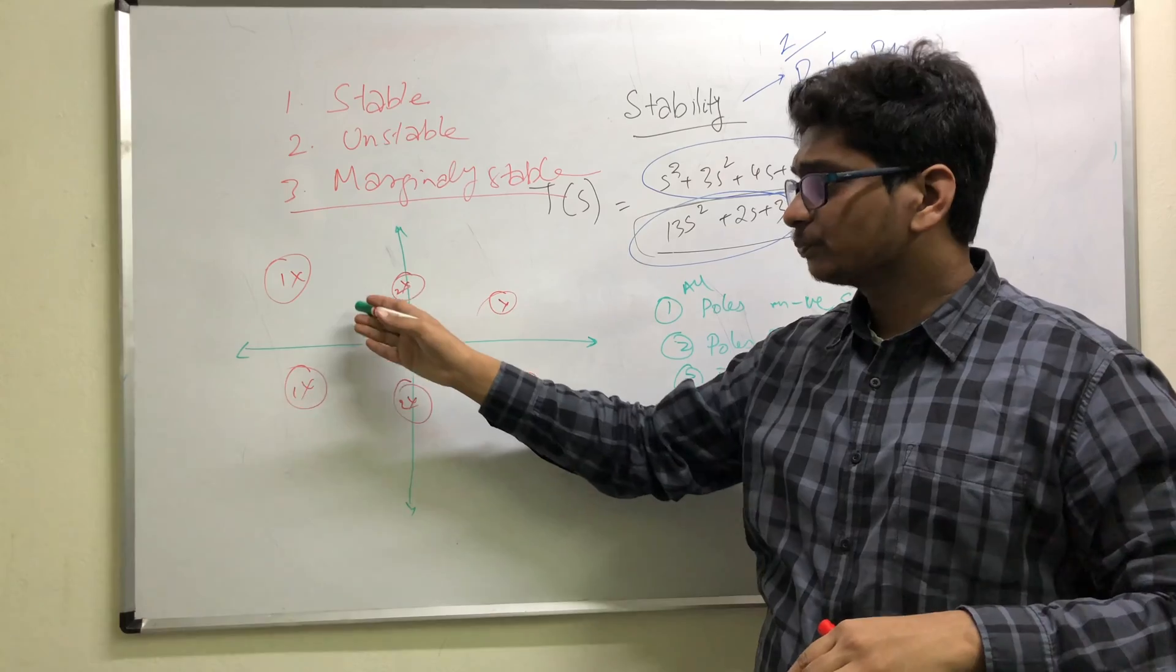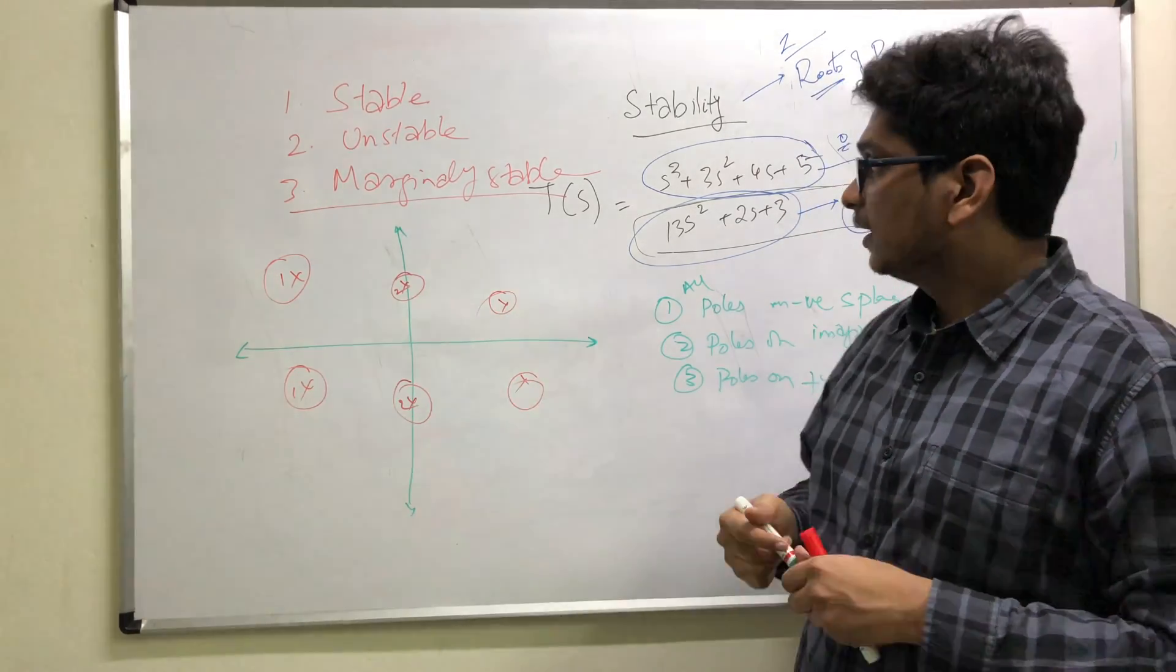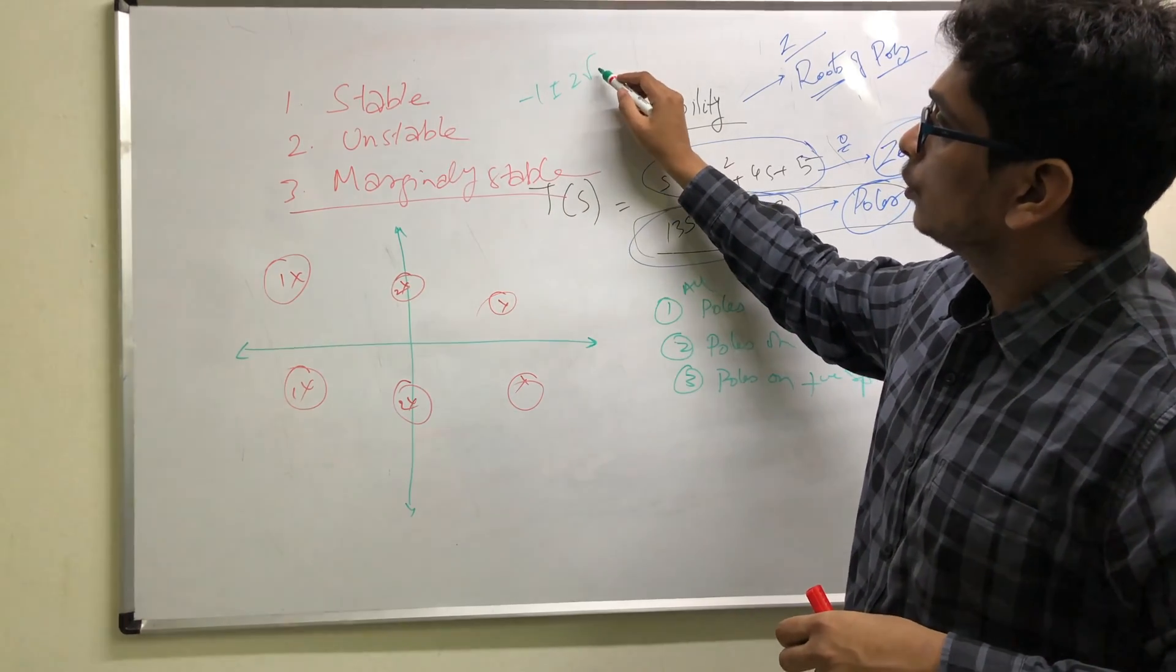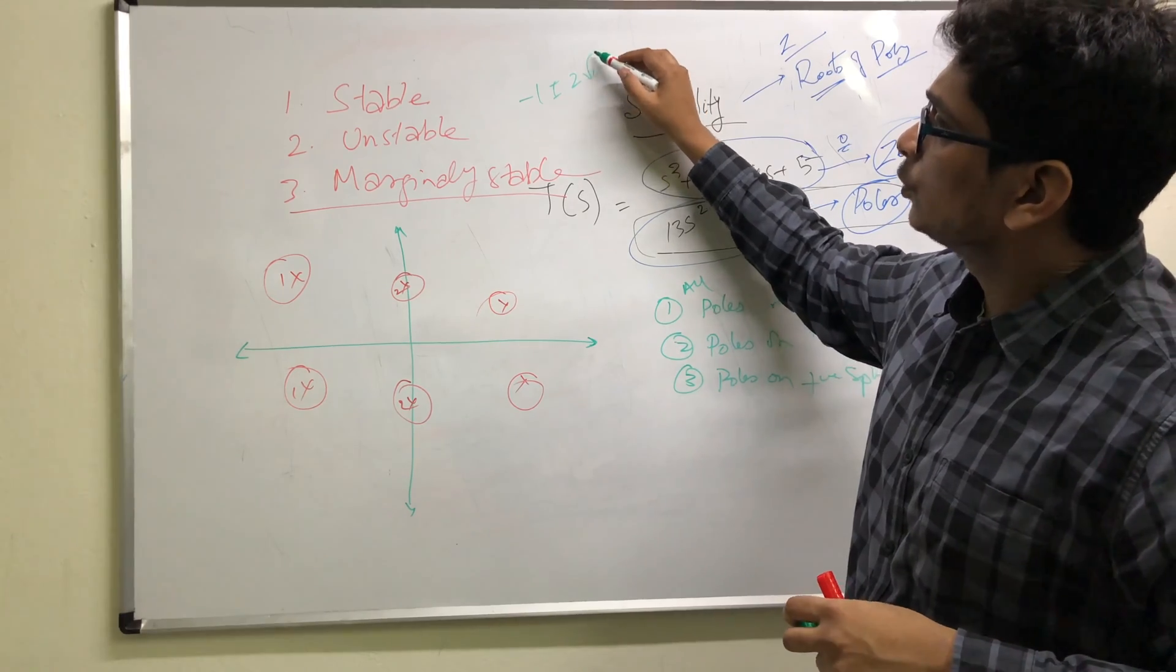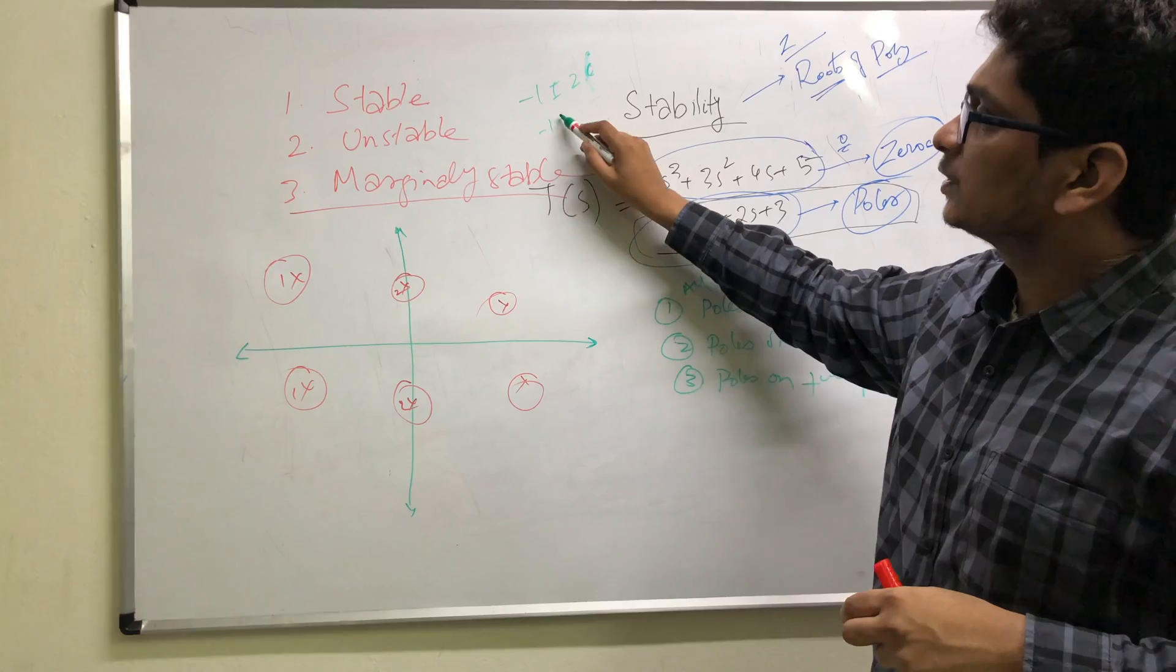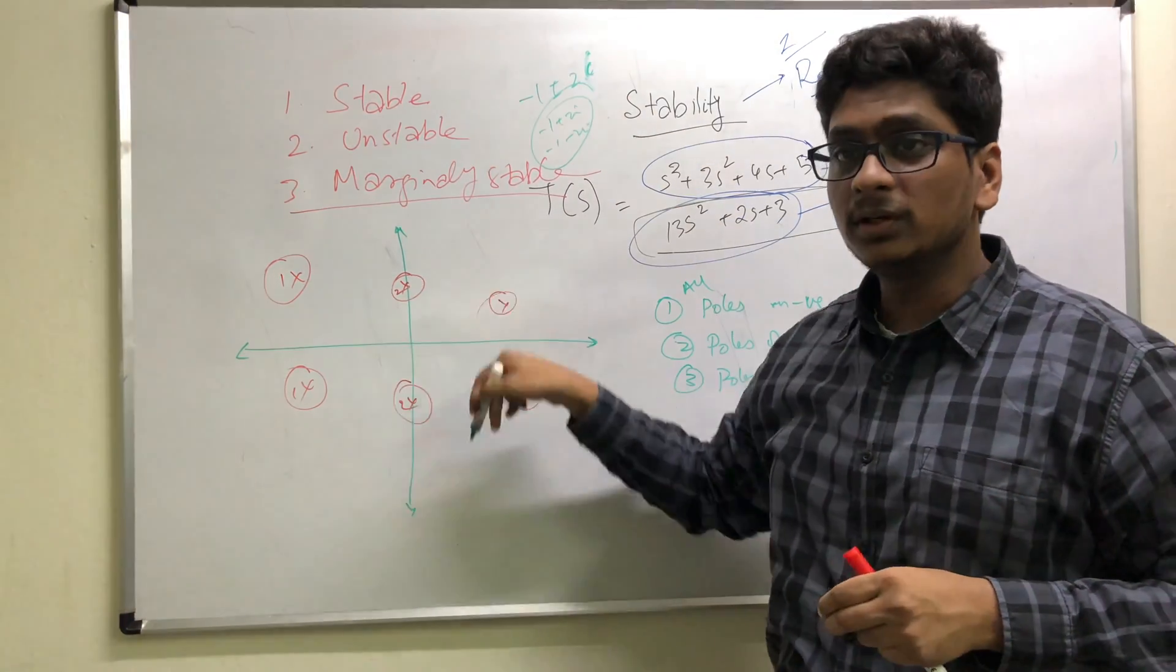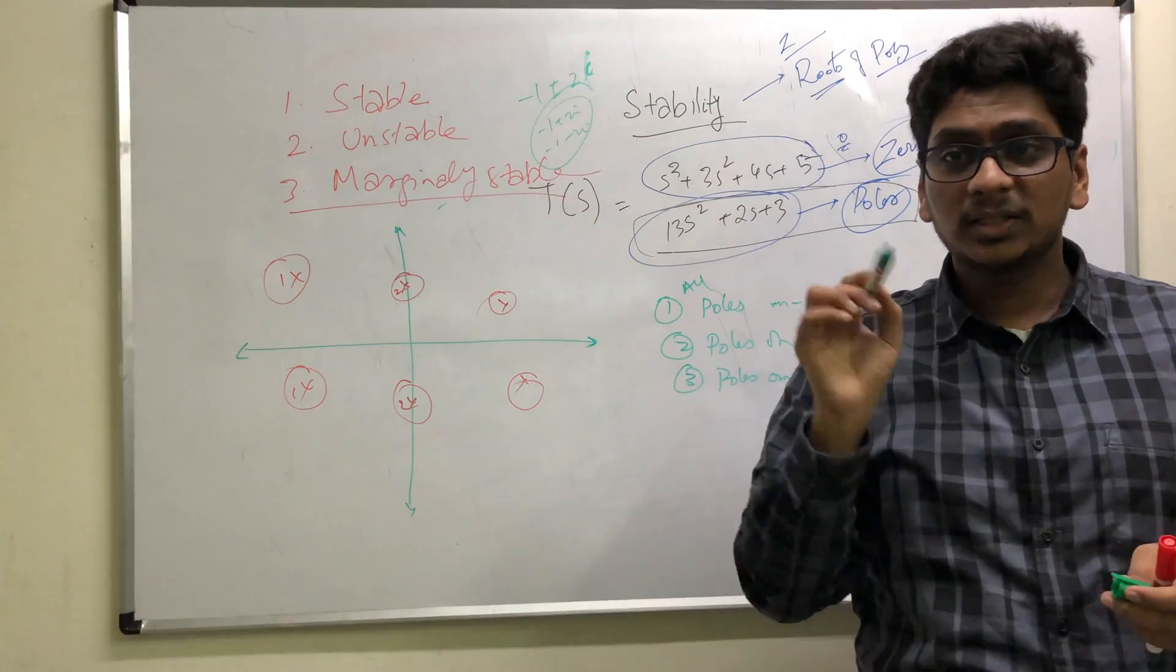If everything else is on the negative, but there are two roots - say -1 ± 2j - then there is a pair of roots on the imaginary axis. Then the system is supposed to be marginally stable.